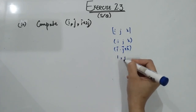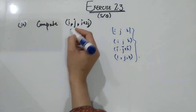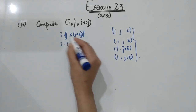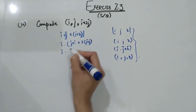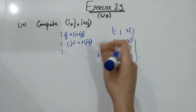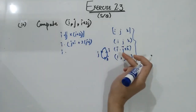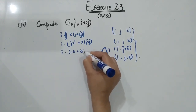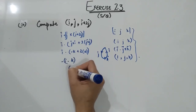Here you have to find I dot (J cross (I plus two J)). Expanding: J cross I plus two times J cross J. Using cyclic permutation, I cross J is K but J cross I is in the clockwise direction, so J cross I is minus K. J cross J is zero since the cross product of two same vectors is zero. This leaves I dot (minus K), and I dot K is zero, so the answer is zero.